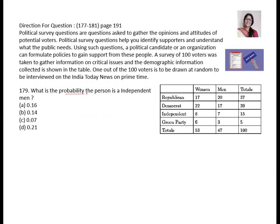Next: what is the probability the person is an independent man only — not a woman, man only. So this line is independent men only, which is 7, not the total 15. So it will be 7 upon 100, which gives 0.07. So C is the answer.